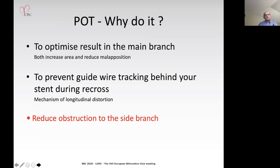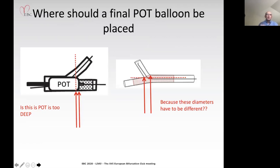Regarding optimization of side branch scaffolding—where should the final POT balloon be placed? On the left-hand side you see a cartoon of the POT balloon. Consider whether that position is too deep. On the right-hand side we can see that the diameter of the side branch stent needs to be different to the diameter of the main branch stent.